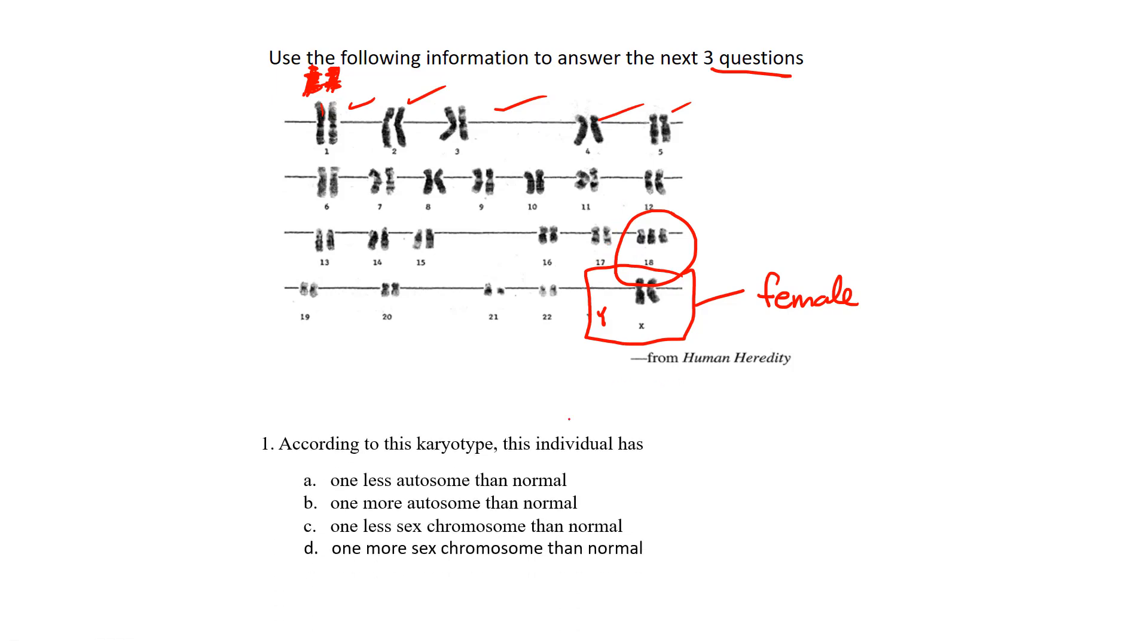Let's look at the first question. According to this karyotype, this individual has one less autosome than normal. When we talk about autosomal chromosomes, that's all the chromosomes listed on this karyotype from 1 to 22. Those are all autosomal. Then we have at the end two sex chromosomes. Does it have one less autosomal? No. We just said this was a trisomy where it had an extra autosomal chromosome on the 18th.